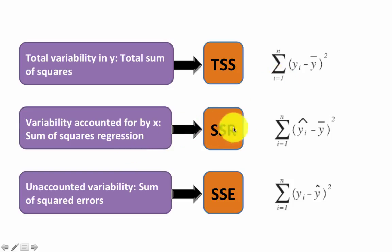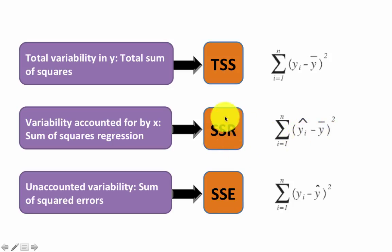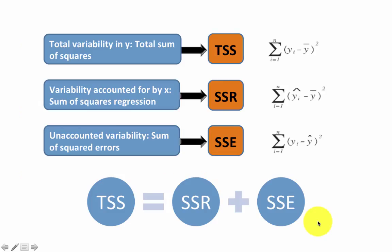Once you have the regression, the residual from the regression line to the mean is y-hat minus y-bar. That is called the sum of squares regression, or SSR. Even after regression, there is still some leftover residual — y-i minus y-hat — the distance from the point to the regression line. That is called sum of squared errors, or SSE. It always holds that TSS equals SSR plus SSE.